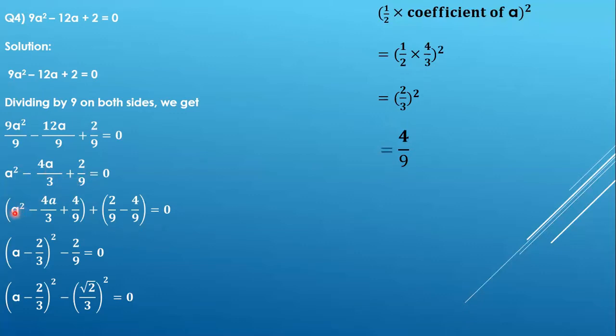Now this 4/9 we will be adding as well as subtracting in this given equation. So it becomes a² - 4a/3 + 4/9 - 4/9 + 2/9. This gives us the perfect square: (a - 2/3)².